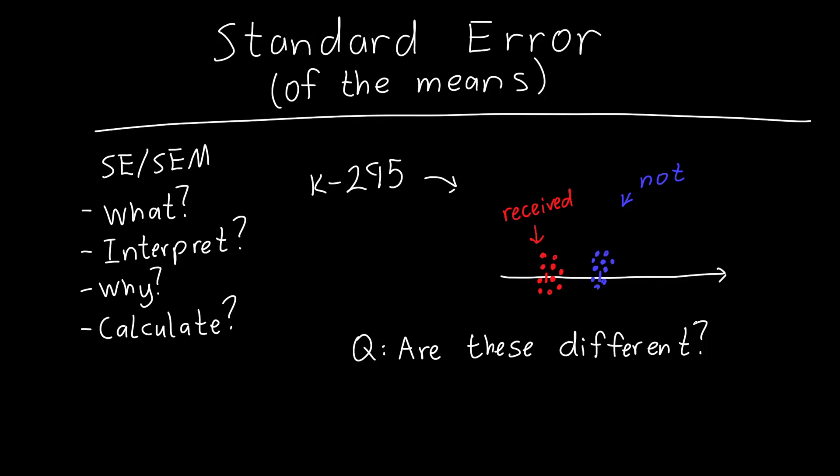The standard error lets us answer this question. In particular, it lets us answer the question: are the means of these two populations different? That's usually what we care about when we're designing a new treatment. There's going to be some variation, but we care about the average difference between a treatment group and people that didn't receive the drug.